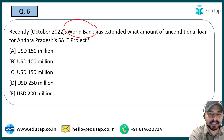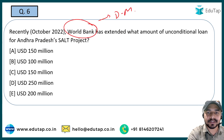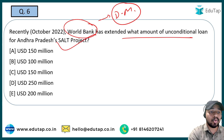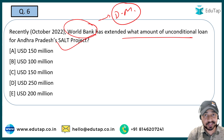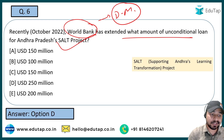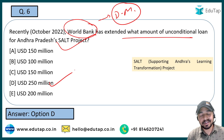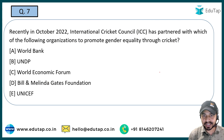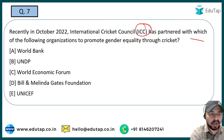The next question: World Bank, whose president is David Malpass, has extended what amount of unconditional loan for Andhra Pradesh's SALT project? This project is basically related to the education sector, and the amount extended by the World Bank is 250 million dollars. SALT stands for Supporting Andhra's Learning Transformation project.